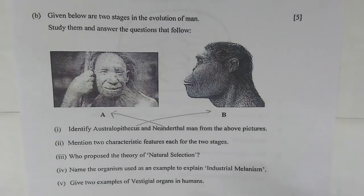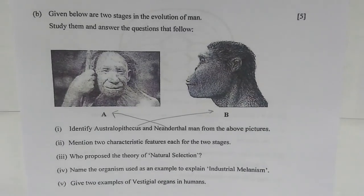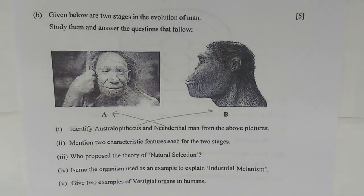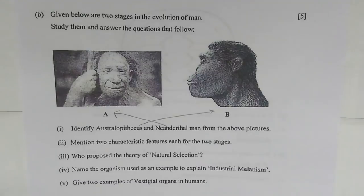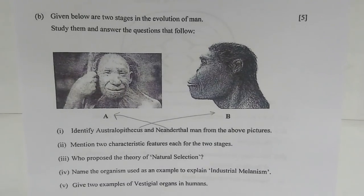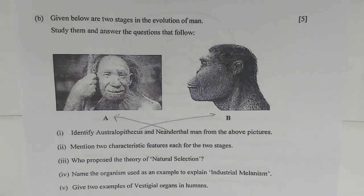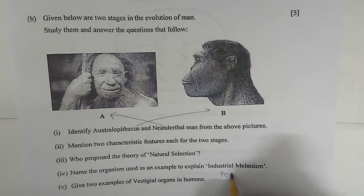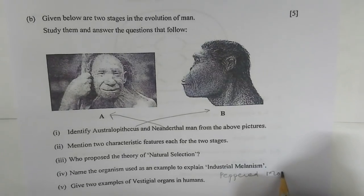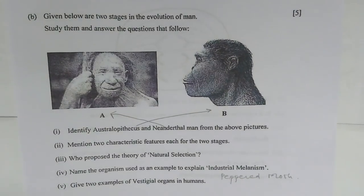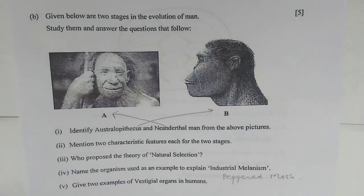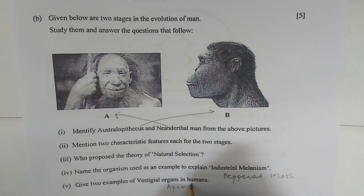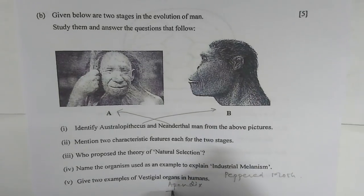Number three — who proposed the theory of natural selection? Charles Darwin. Number four — name the organism used as an example to explain industrial melanism. It was the peppered moth. Number five — give two examples of vestigial organs in humans: the appendix and the tailbone.